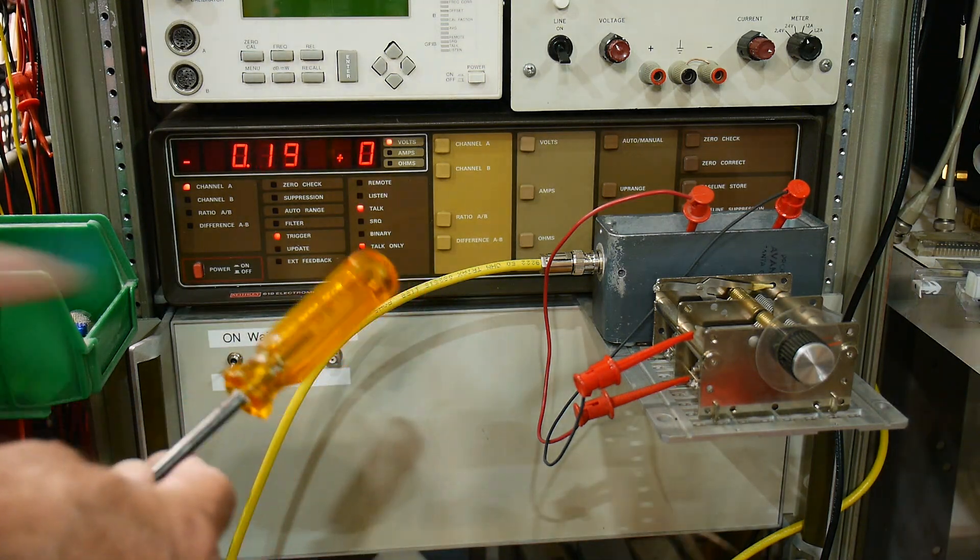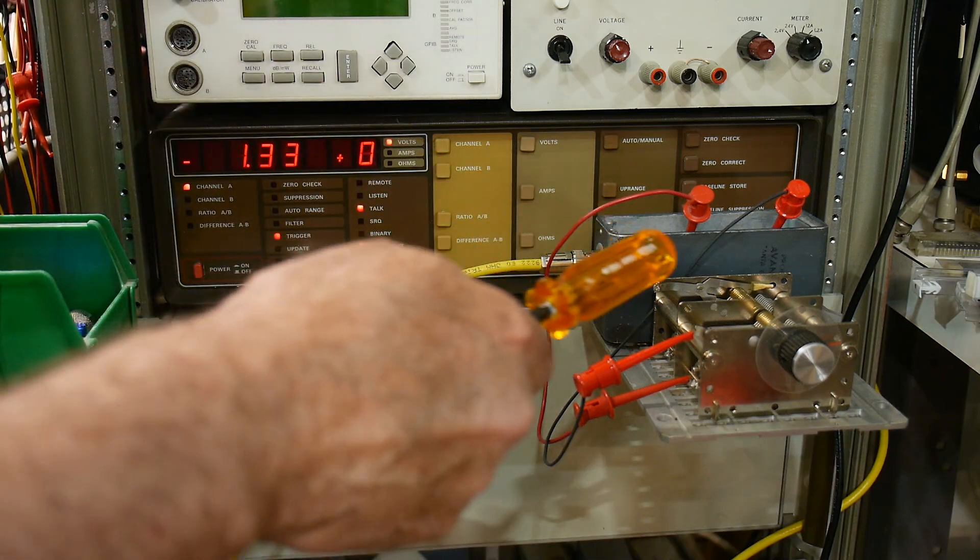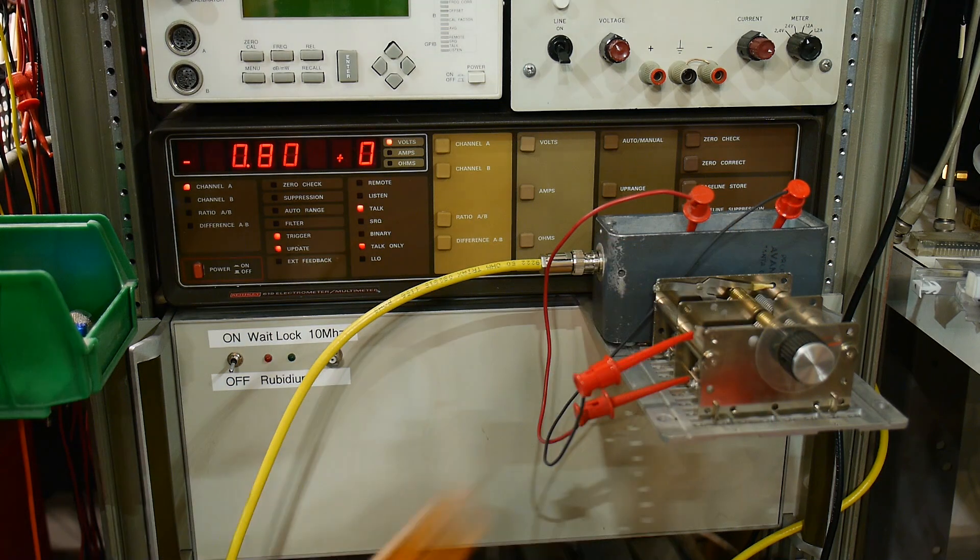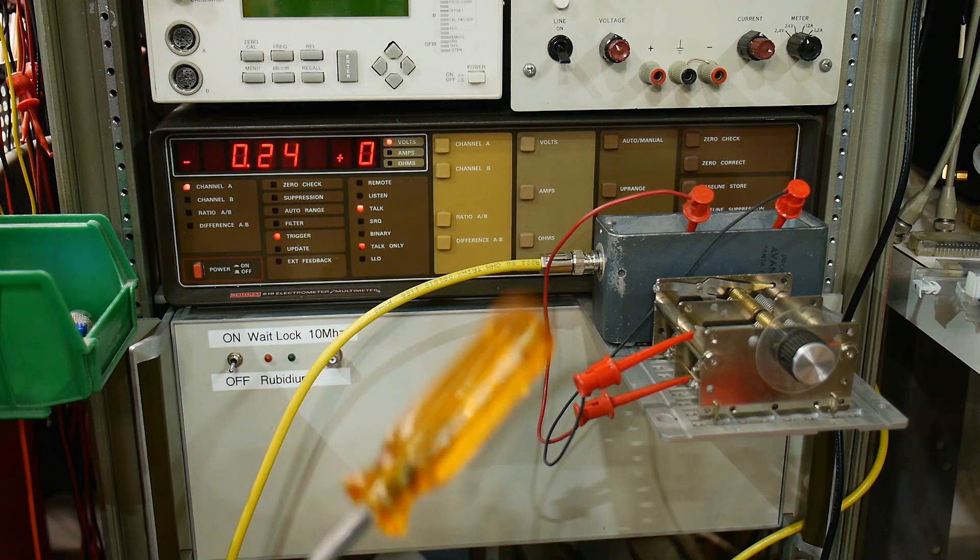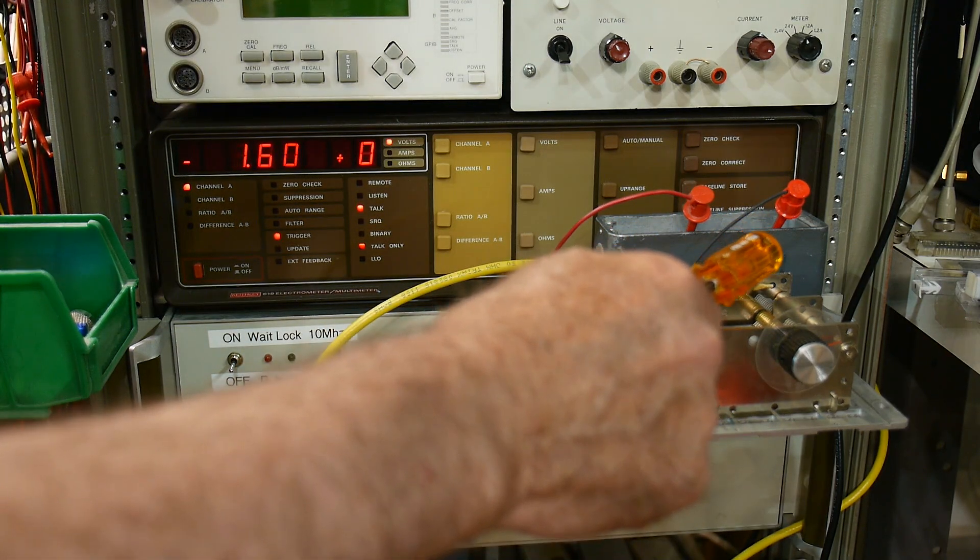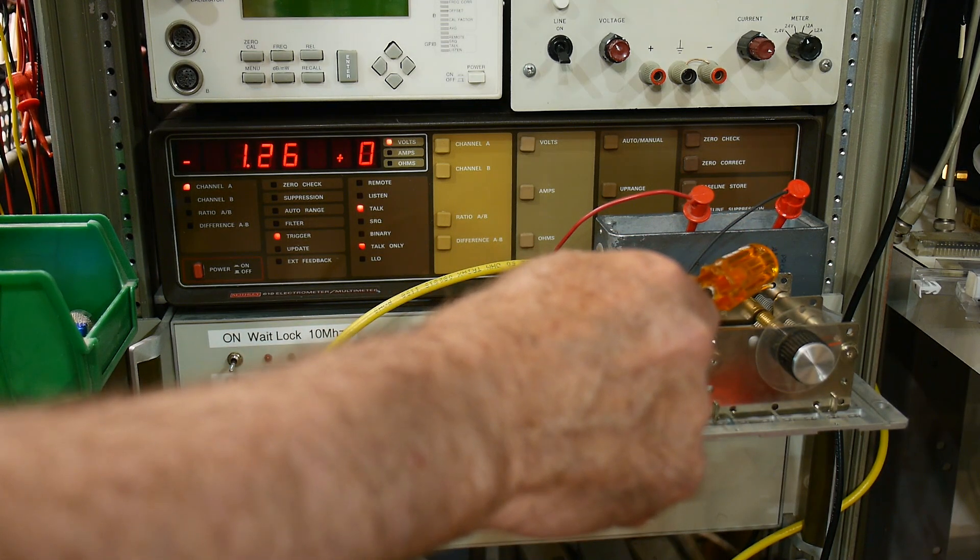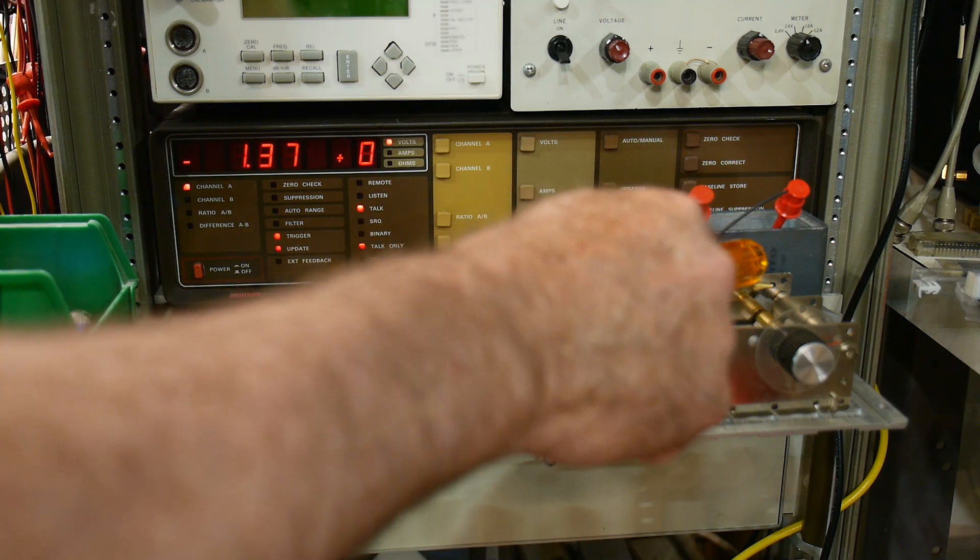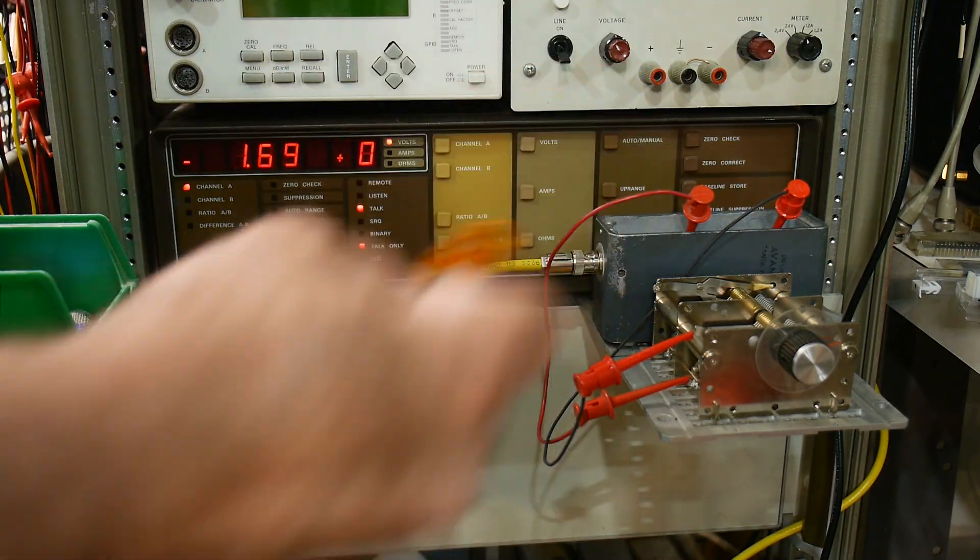Now I'm going to do it with this screwdriver. The screwdriver's made out of plastic, so if I rub it on my arm and then I bring it near, look at that, look at the voltage go up! And the voltage goes back down as I remove it. That's because there is charge on this plastic and as I bring it near this capacitor, that charge is seen by the capacitor. And then if I let it go, it follows it. I'm not able to transfer the charge yet.